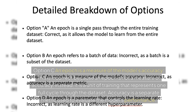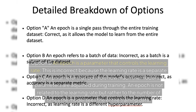Option C: an epoch is a measure of the model's accuracy — this is incorrect. An epoch is not a measure of accuracy; instead, it is a unit of training that represents one full cycle through the dataset. Accuracy is a separate metric used to evaluate the model's performance.